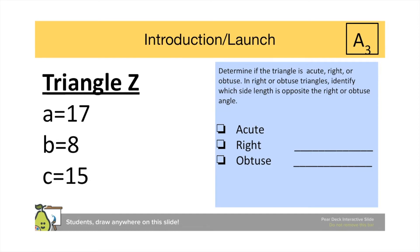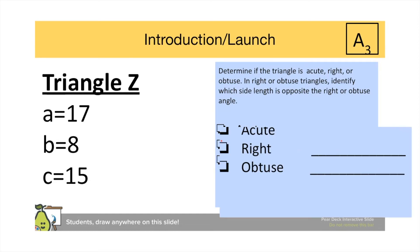And triangle Z is a right triangle, since eight squared plus fifteen squared is exactly seventeen squared. And the side of the length seventeen is the one that's opposite the right angle.